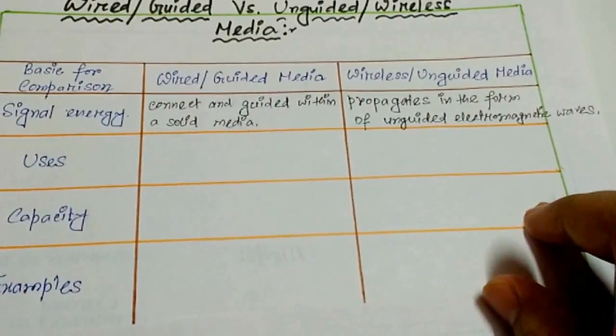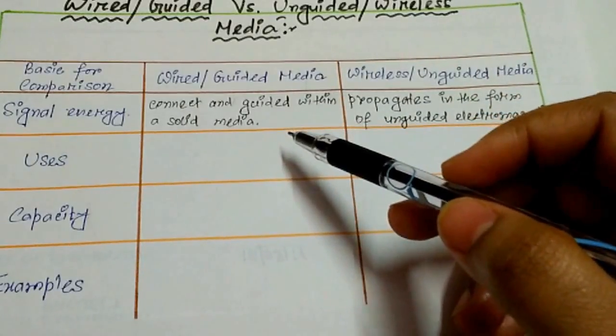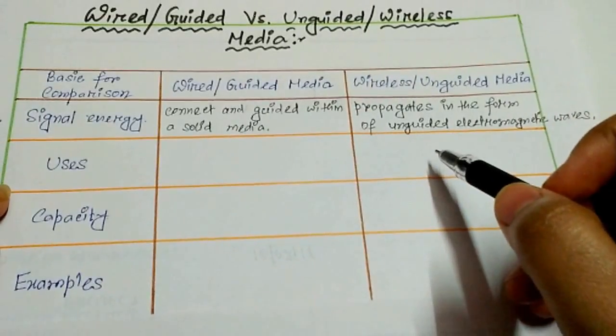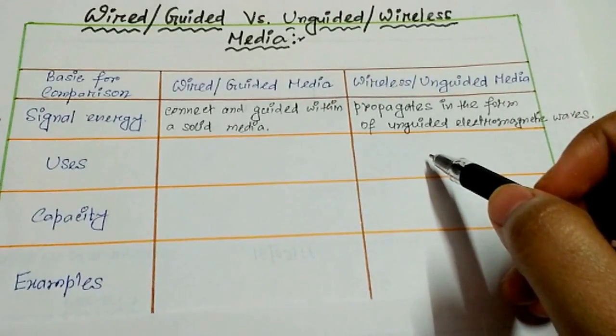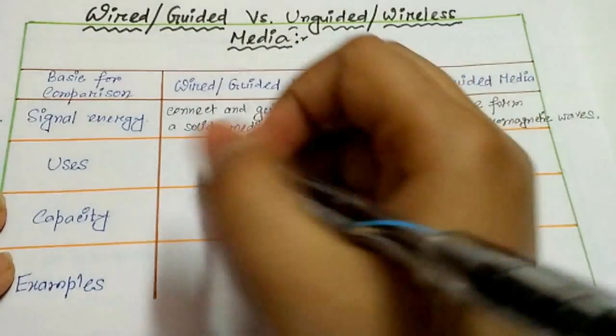Now the second point, which is uses. The wired media is used for point-to-point communication, and the unguided media is used for radio broadcasting in all directions.